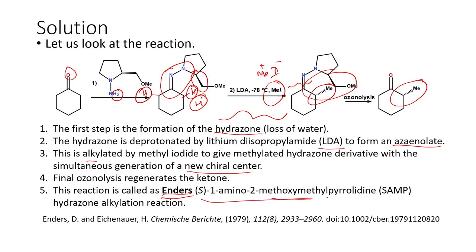This is called the Enders alkylation reaction. The reagent used is called SAMP — (S)-1-amino-2-methoxymethylpyrrolidine. This pyrrolidine-based chiral auxiliary is crucial for this reaction. Enders developed this and it was first reported in 1979. Those interested in the asymmetric version can refer to the original paper and subsequent papers to understand how this reaction actually proceeds.